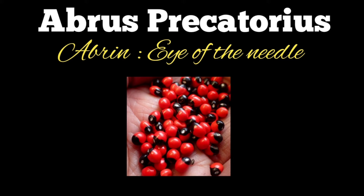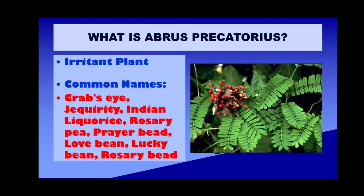The importance has to do with a toxic principle that is present in this plant which is called Abrin. I have titled this 'Abrin: Eye of the Needle' and Dr. Roshni agrees that that is a very apt title. You will understand the meaning behind that title a little later as we go along in this presentation. Let us begin with the first question: what is Abrus precatorius?